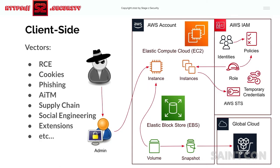The third way is the client-side approach — you're going after the engineers writing code, the SREs or admins of the AWS environment, trying to get on their laptops or steal their sessions to the cloud providers and then reuse those sessions. There are a lot of different attack paths here, and we'll talk more about what's been successful for our team as we move through the talk.